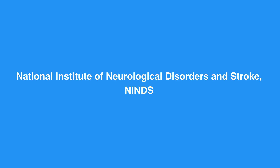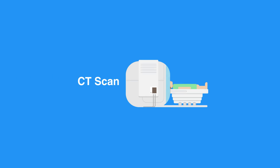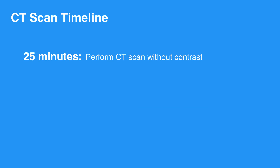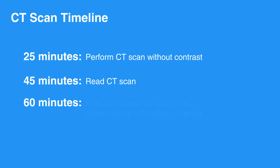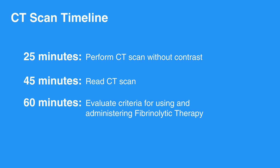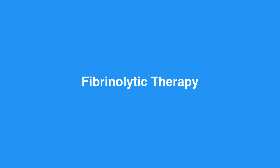If the time of symptom onset is known, the National Institute of Neurological Disorders and Stroke, or NINDS, has established time goals. The NINDS time goals advise that the individual should have a general assessment by an expert and urgent CT scan without contrast within 10 minutes of arrival. Within 25 minutes, perform a CT scan without contrast and neurological assessment, and read the CT scan within 45 minutes. Within 60 minutes, evaluate criteria for fibrinolytic therapy, or clot buster. Fibrinolytic therapy may be used within 3 hours of symptom onset, or 4.5 hours in some cases. Within 180 minutes of arrival, the individual should be admitted to the stroke unit.